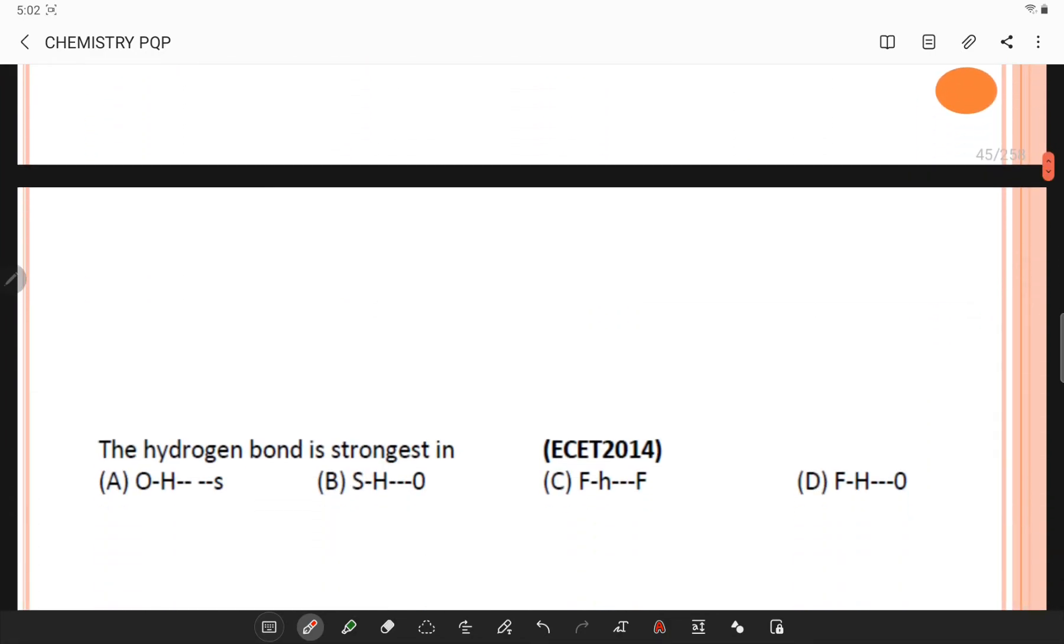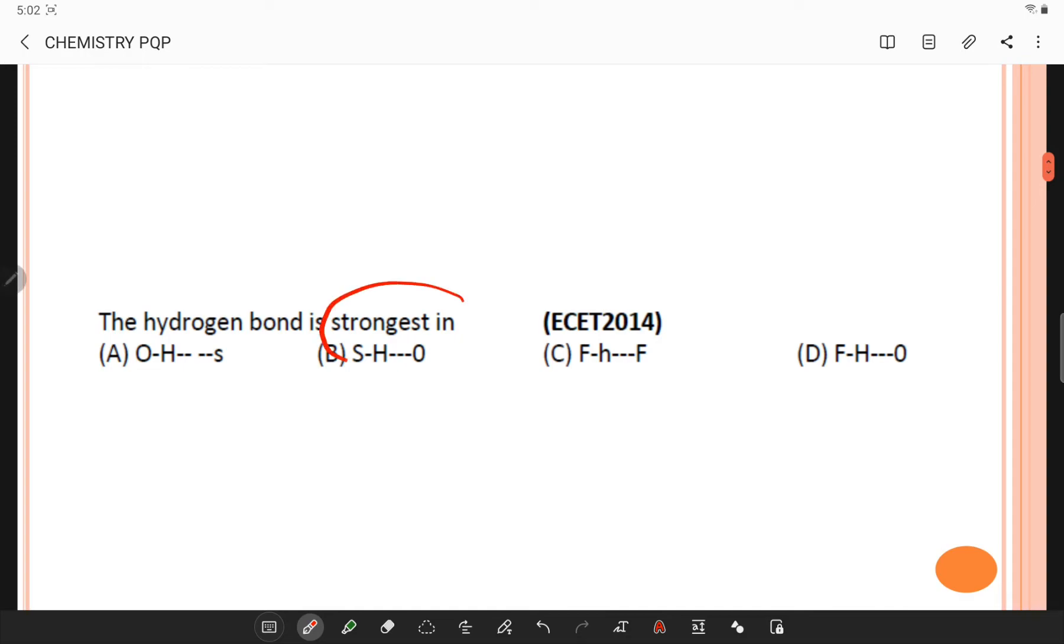Next, the hydrogen bond is strongest in which? If you observe, highest electronegativity of fluorine makes the hydrogen bonding of hydrogen and fluorine strongest in comparison with the other three.